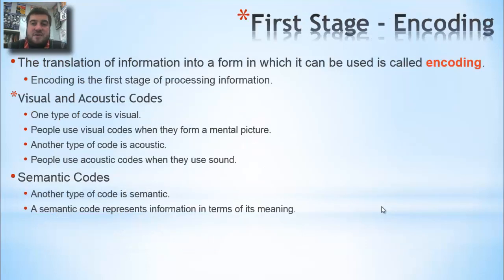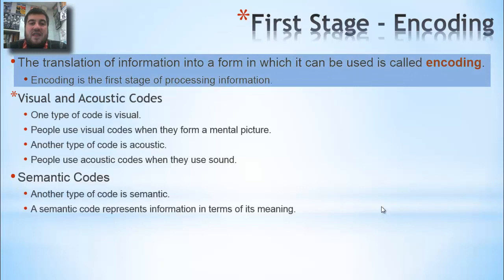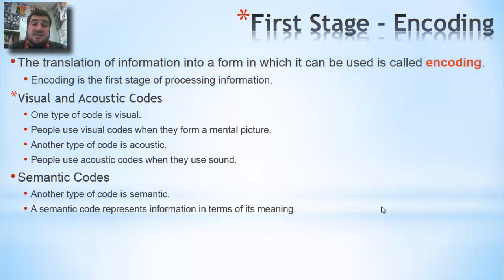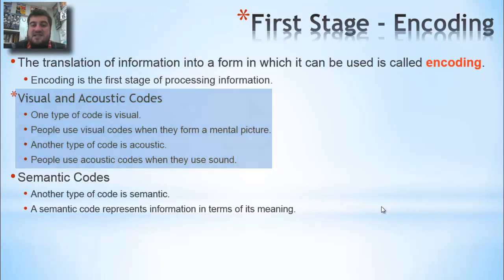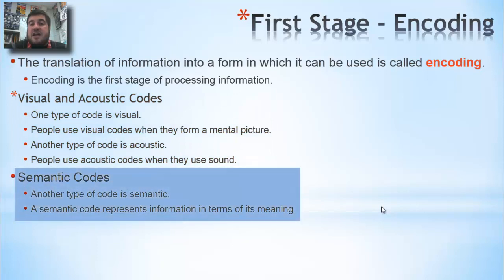Encoding is the first stage of memory — when we translate information coming into our sensory inputs into a form which it can be used. We use three types of codes: visual codes, where we form mental pictures of things; acoustic codes, where we use sound; and semantic codes, which make sense in terms of their meaning or context.